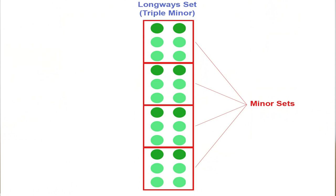Within these longways sets, the dancers would be divided into groups of three couples, and these smaller groups within the big longways set were called minor sets. Thus, this formation came to be known as the triple minor. The triple minor was the standard longways formation in Jane Austen's day, and this differs significantly from how we dance English country dancing today.